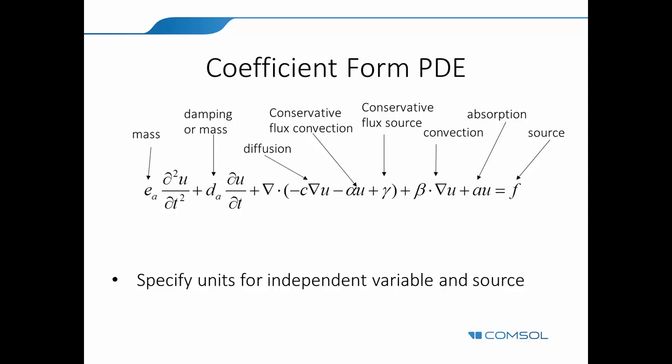It fills in the rest from dimensional consistency. For example, if you think about the absorption term, the units of A multiplied by the units of U should be the same dimension as F. So all of these others will be filled in from dimensional consistency. And that basically makes it consistent.